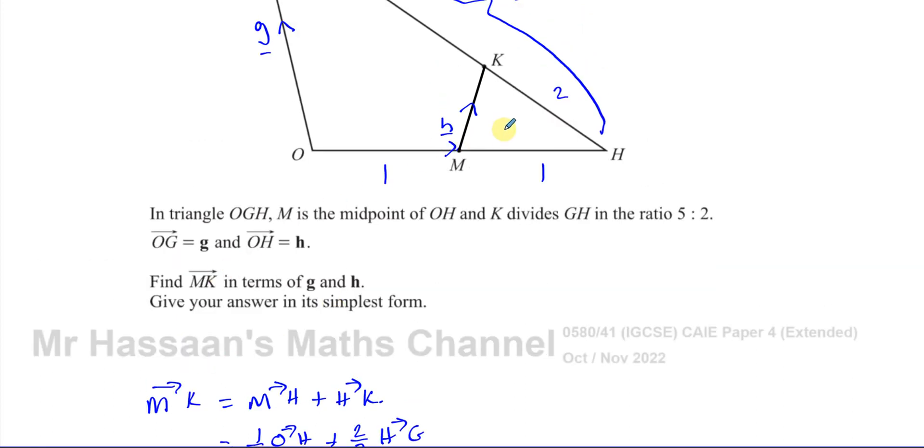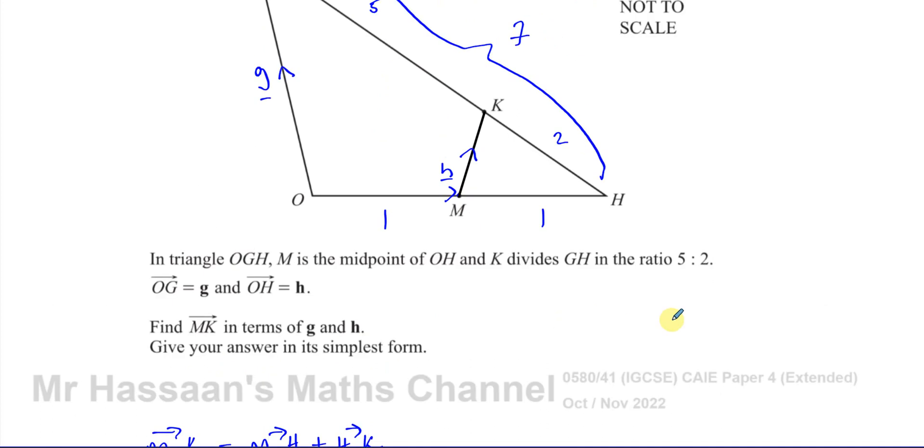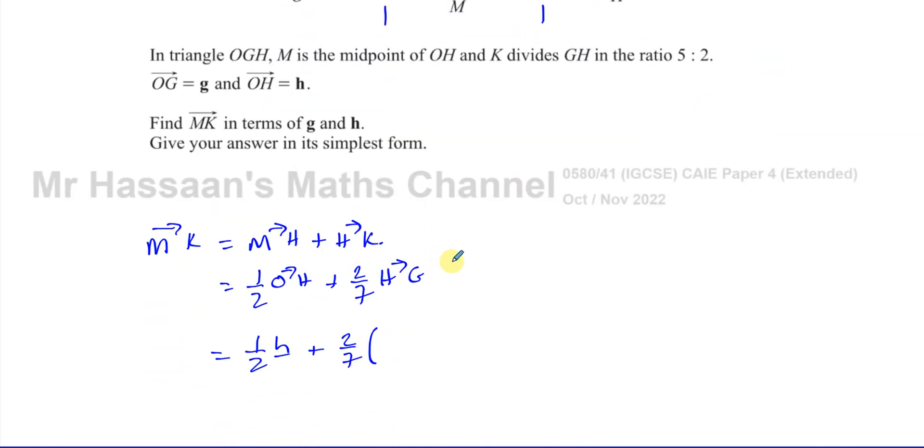So I've got to have two sevenths of HG. Now, we know OH is a vector h. So that's no problem. So this is going to be a half of h plus two sevenths of, now HG. What is a vector from H to G? Now HG is, if I go from H to O plus O to G. So HG is HO plus OG, which is minus h plus g. So I can replace this with minus h plus g, which is the same as saying g minus h.